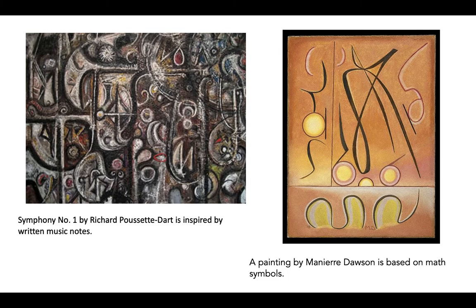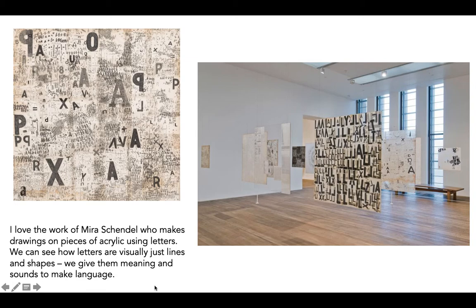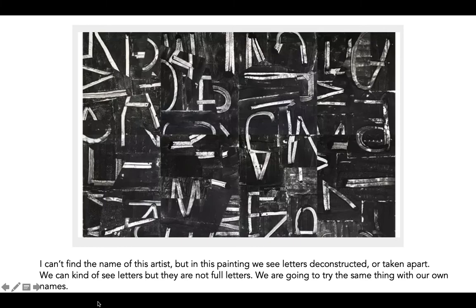These two paintings are not inspired by letters but different writing systems. Music and musical notes is a writing system, so this is another painting based on music and the way musical notes look on a page. And this is a painting by Manier Dawson that is based on math symbols — the equations we use in math. I love the work of Mira Schendel, who makes drawings on pieces of acrylic using letters. We can see how letters are visually just lines and shapes — we give them meaning and sounds to make language. In this painting we see letters deconstructed or taken apart; we can kind of see the letters but they're not full letters. We're going to try the same thing with our own names.